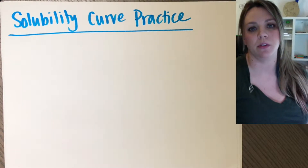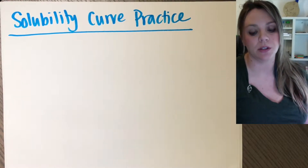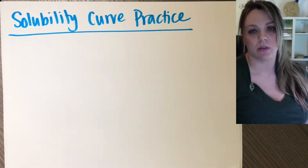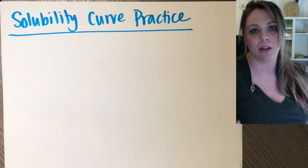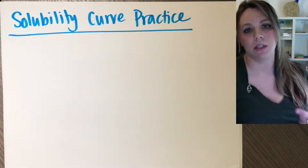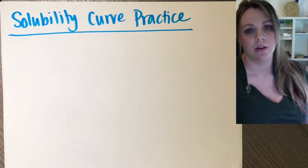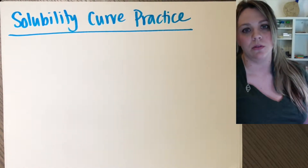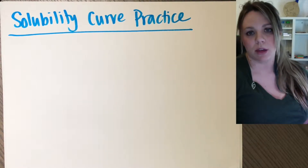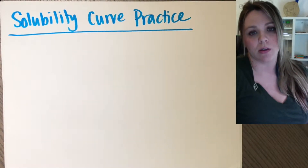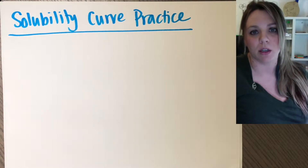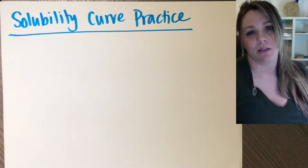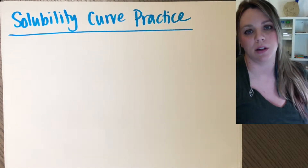In this video we're going to go over the different types of questions you can actually be asked about solubility curves — things you have to calculate. There are really only three types of questions they can ask you. Type one is just basic — can you read the graph? Type two is do some calculations, but always with 100 grams of water. Type three is figure out calculations when it's not dissolved in 100 grams of water.